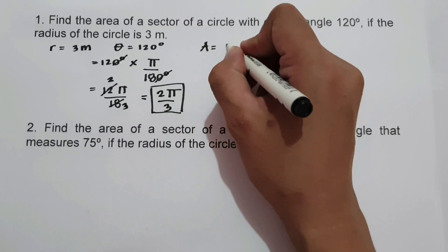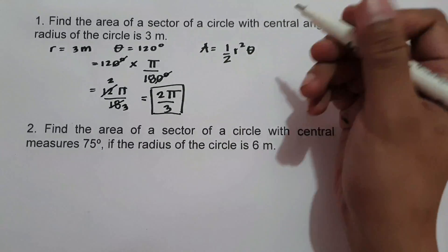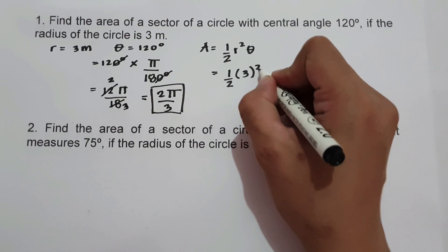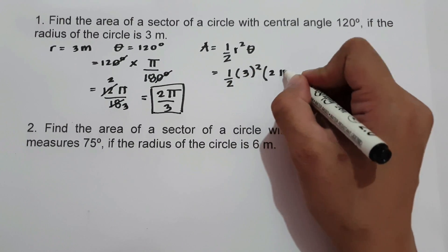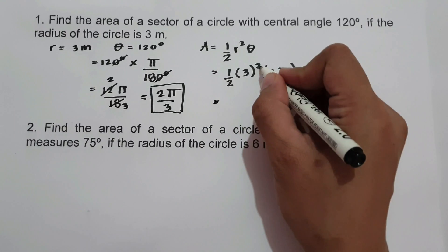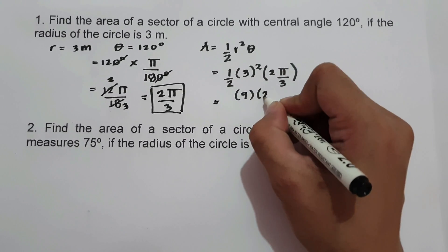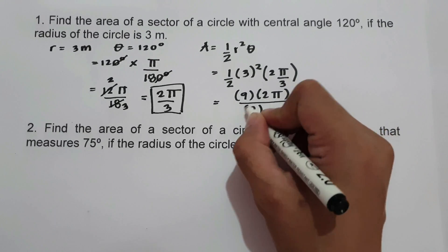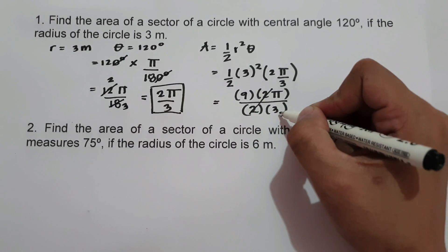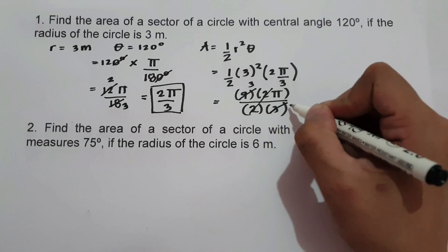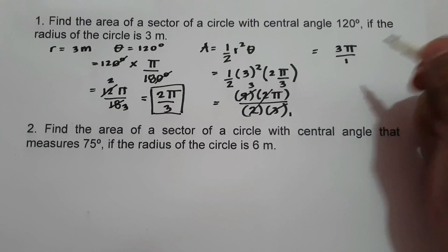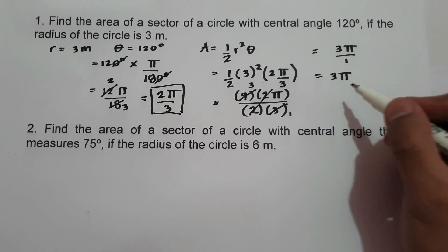Now let us use the formula: area equals 1 half r squared theta. We have 1 half, then radius is 3 meters, squared, times the central angle in radian which is 2 pi over 3. To simplify: 3 squared is 9, times 2 pi over 2 times 3. We cancel 2, and since 9 and 3 are divisible by 3, 9 becomes 3 and 3 becomes 1. Therefore, we get 3 pi, which is the area of the sector.